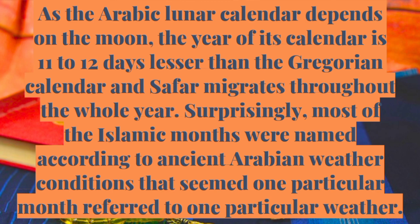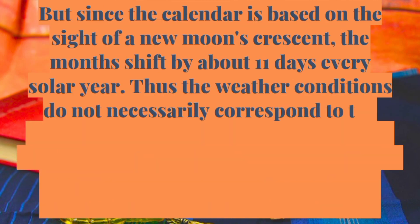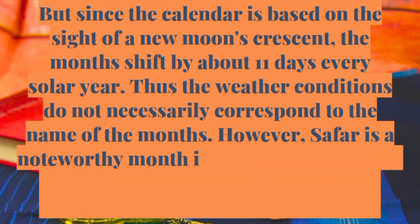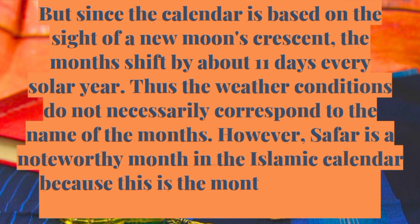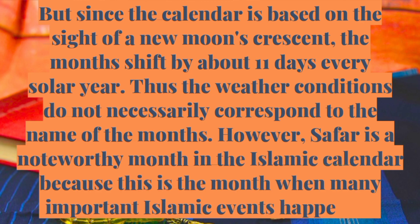Surprisingly, most of the Islamic months were named according to ancient Arabian weather conditions, where one particular month refers to one particular weather. But since the calendar is based on the sighting of a new moon's crescent, the months shift by about 11 days every solar year. Thus, the weather conditions do not necessarily correspond to the name of the month.